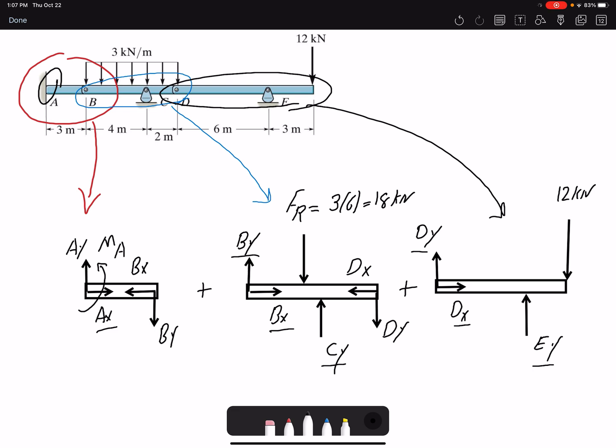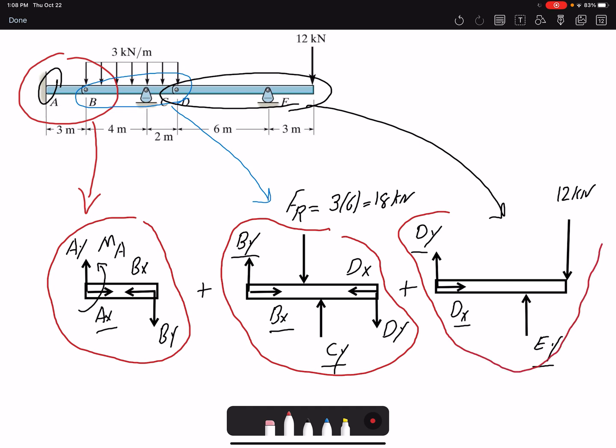But which free-body diagram do we need to start first? If you look at it, if you look at member AB, for this free-body diagram, you can see we have six unknowns. So we really can't solve it. And for the free-body diagram in the middle, we have five unknowns. So we can't solve that either. But the free-body diagram on the right, we only have three unknowns. So I can solve the unknowns and then move from right to the left.